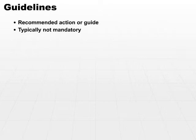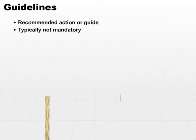Think of building a fence. When you build a fence, one of the first things you do is you drive a stake in the ground for the corners of the fence, and then you take a string or a line between the two stakes in the ground, and that's your guideline.